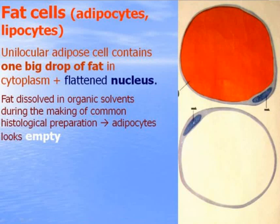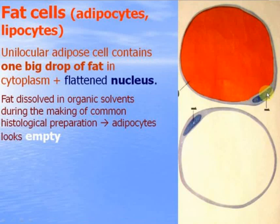Fat cells — adipocytes, or lipocytes — are unilocular adipose cells containing one big drop of fat in the cytoplasm. In this case, stained by Sudan 3 in orange. This fat pushes the nucleus and organelles into the periphery. These cells contain a flattened nucleus. Fat is dissolved in organic solvents during the making of common histological preparation, so adipocytes look empty — like a signet ring.